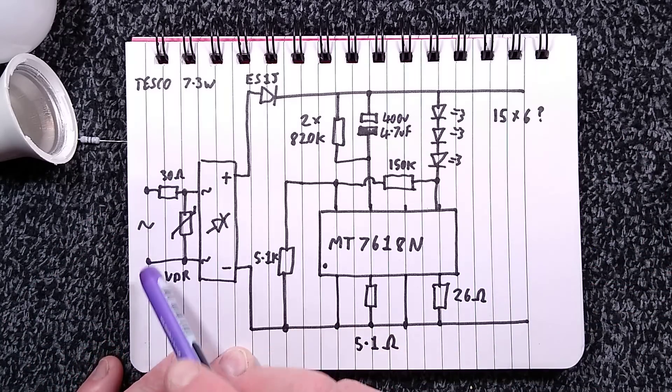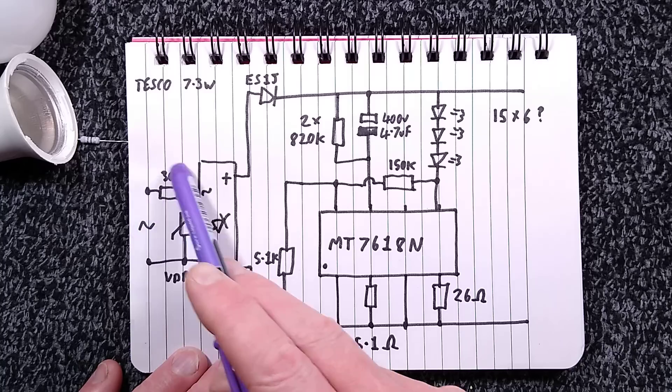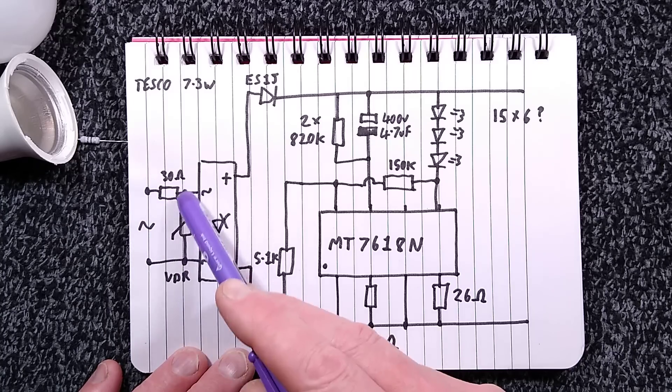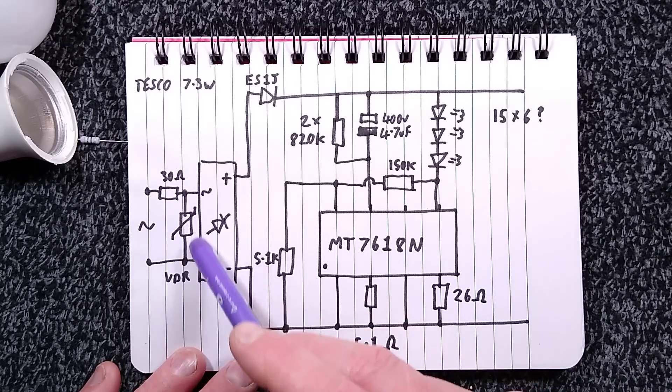So here's the circuitry. The main supply comes in. There's a 30 ohm resistor which acts as a fuse. There's the metal oxide varistor there which clips any spikes. There's the bridge rectifier.